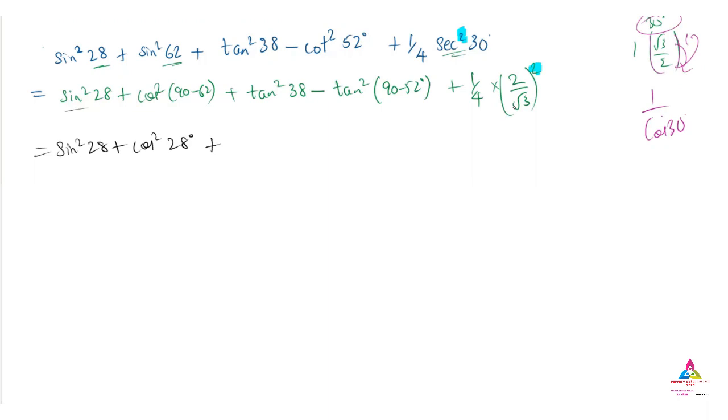Plus one by four into 2 square. 2 square is nothing but 4, and root 3 the whole square, square and square root get cancelled, it will remain 3.